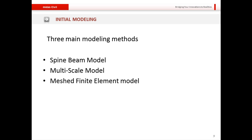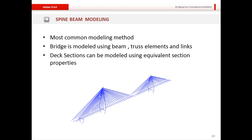Moving on to initial modeling, there are three main modeling methods: the spine beam model, the multi-scale model, and the meshed finite element model. In spine beam modeling — the most common method — the bridge is modeled using beam and truss elements and links representing bearings. The deck section itself can be modeled using equivalent section properties, so the full geometry of the deck is not always necessary.